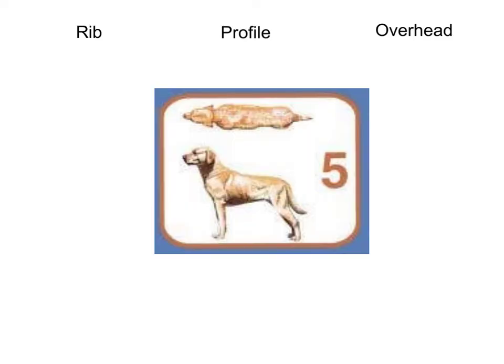To figure out our dog's body condition score, we need to perform three checks, the first of which is the rib check. To perform the rib check, you simply place your hands on your dog's rib cage and feel the rib cage. In an ideal weight dog, the ribs should just be able to be felt through the coat, and you should notice just a slight indentation after each rib. In an underweight dog, the ribs are going to be much more pronounced. And in an overweight dog, you won't be able to feel the ribs at all.